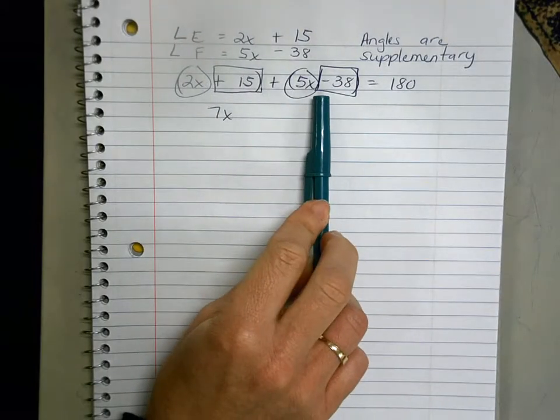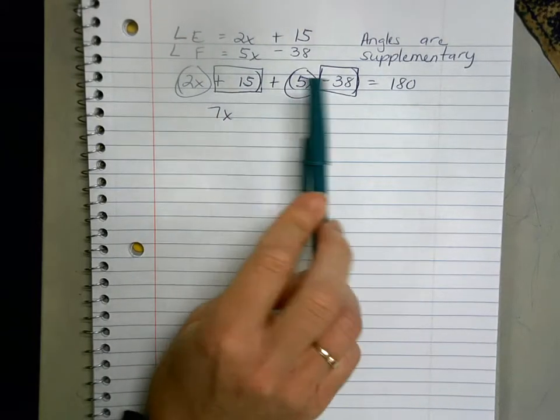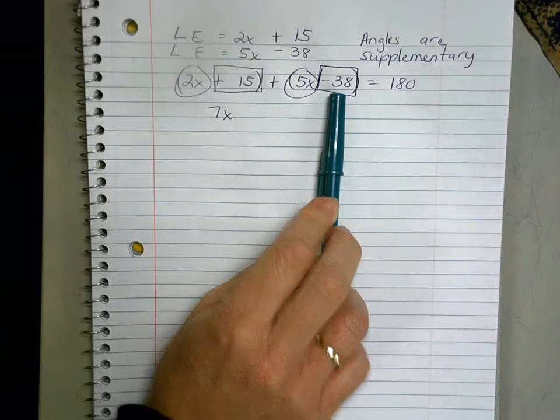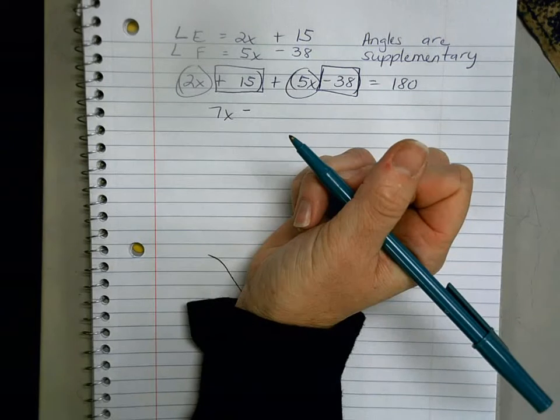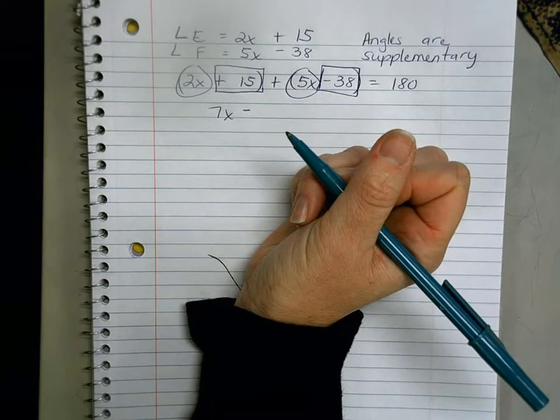What we're doing here is we're adding two integers that have opposite signs, so we're gonna subtract and take the sign of the larger absolute value, which means we're gonna get a negative or a minus 23. Positive 15 plus negative 38.